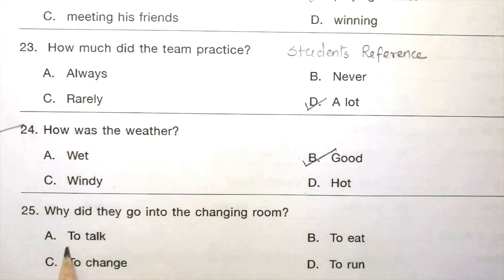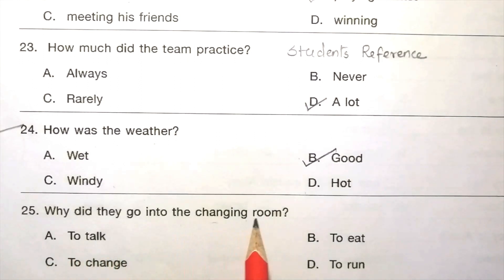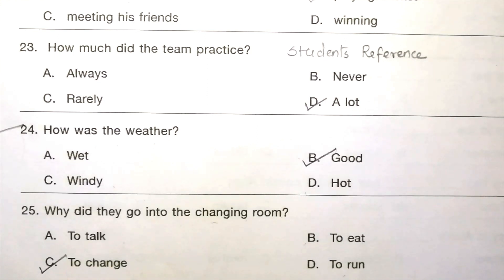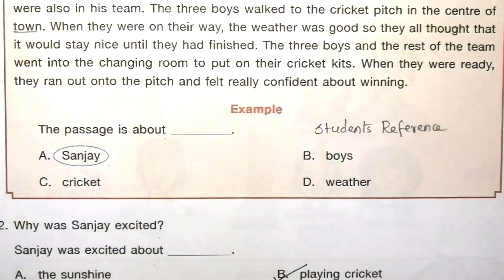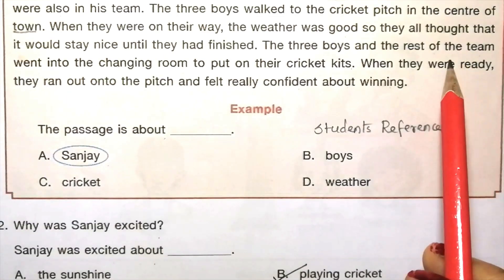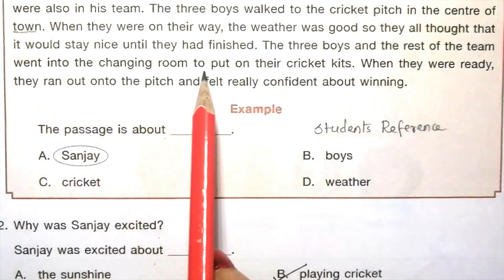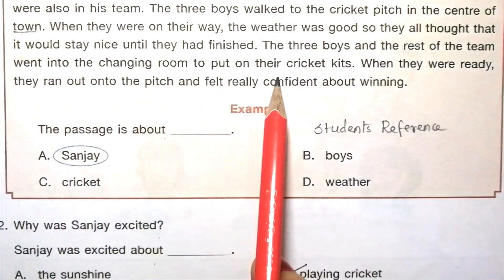Question 25: Why did they go into the changing room? To talk, to eat, to change, to run. The answer is C, to change. The passage states: the team went into the changing room to put on their cricket kits.